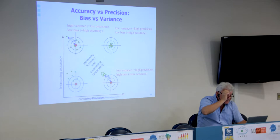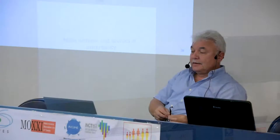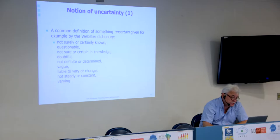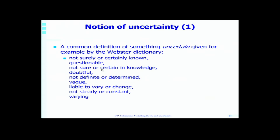So that's a bit of introduction to general concepts. Now, where does uncertainty come from in our models? We'll talk about modeling uncertainty. Uncertainty comes from different sources. The definition of uncertainty from Webster's dictionary: not surely or certainly known, questionable, not definite or determined, vague, liable to vary or change.